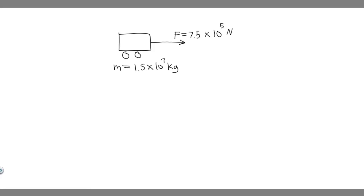In this problem, we're told a freight train has a mass of 1.5 times 10 to the 7 kilograms. If the locomotive can exert a constant pull of 7.5 times 10 to the 5 newtons, how long does it take to increase the speed of the train from rest to 80 kilometers per hour?